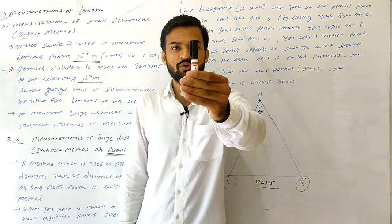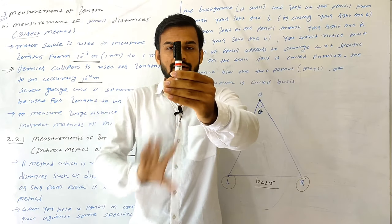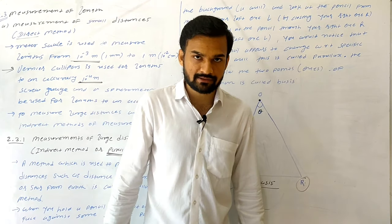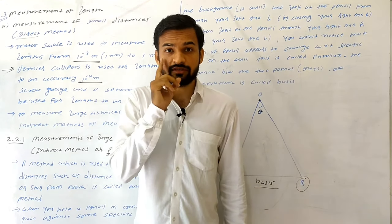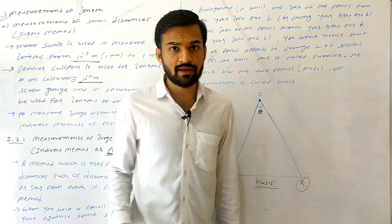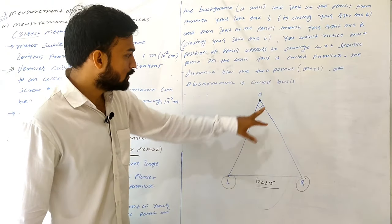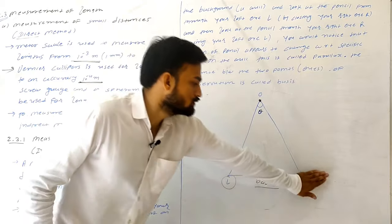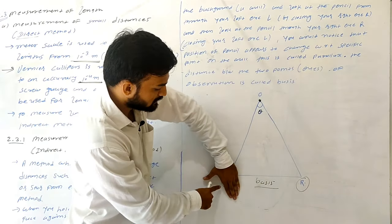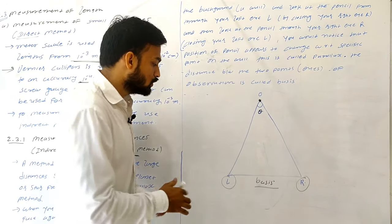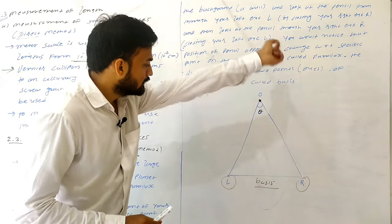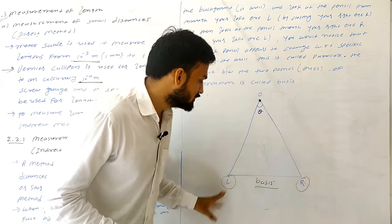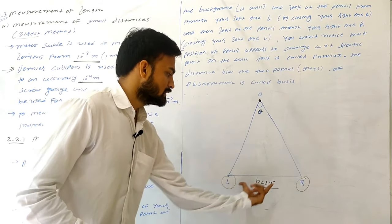The distance between the two points of observation — here, the left eye and the right eye — is called the basis. The angle formed at the pencil (at point O) between the two directions of observation from the left eye (L) and right eye (R), which is angle LOR, is known as theta, or the parallax angle.